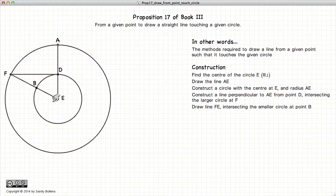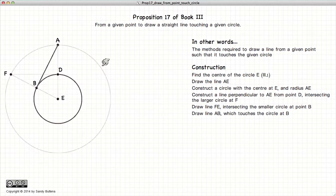We connect F and E, and where it intersects the inner circle we label B. And now we draw the line from B to A. And AB touches this inner circle.